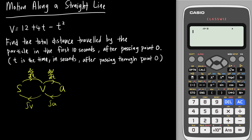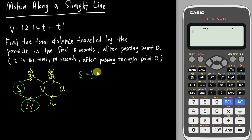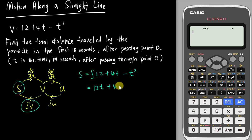This is what you need to do now. In order to find distance, you need to have the displacement, because displacement helps you find the distance. So I integrate the velocity — 12 plus 4t minus t squared — and I get 12t plus 2t squared minus t cubed over 3, plus c.